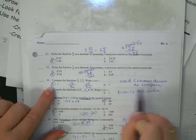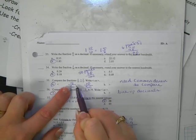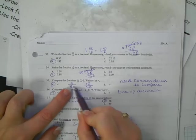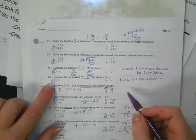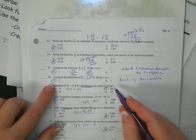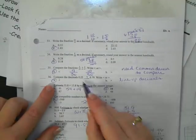Alright, a couple more. Comparing these decimals, 0.22, you just line up your decimals and do a place value at a time. So 2 is less than the 7. So less than is what I'm going to choose.